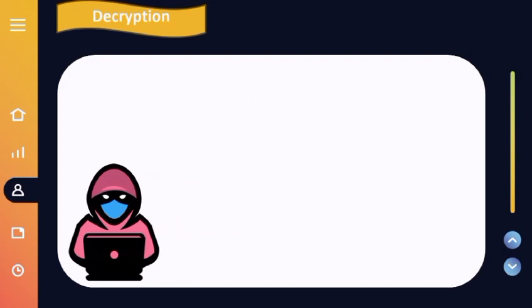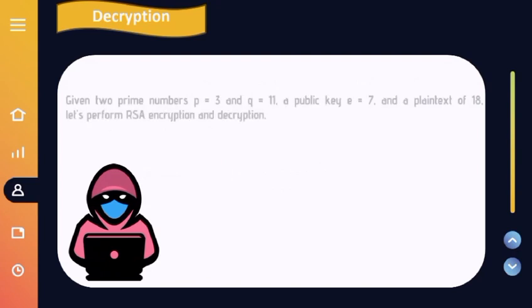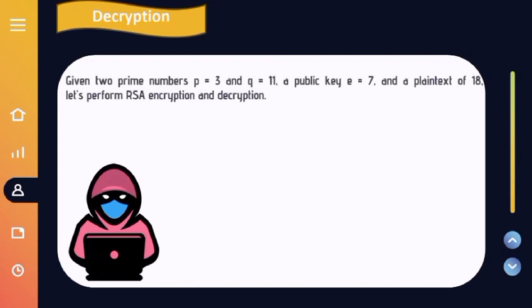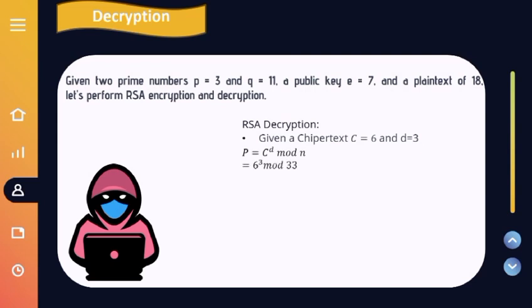Lastly, let's find the plaintext through RSA decryption. The plaintext obtained through RSA decryption using ciphertext 6 is 18.